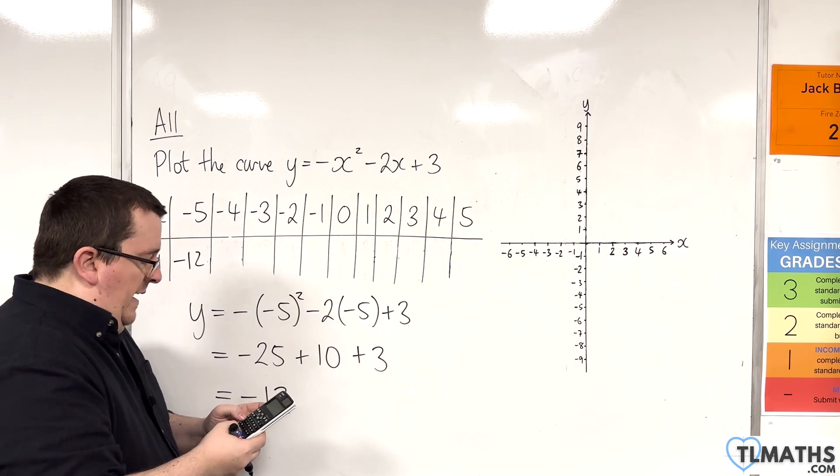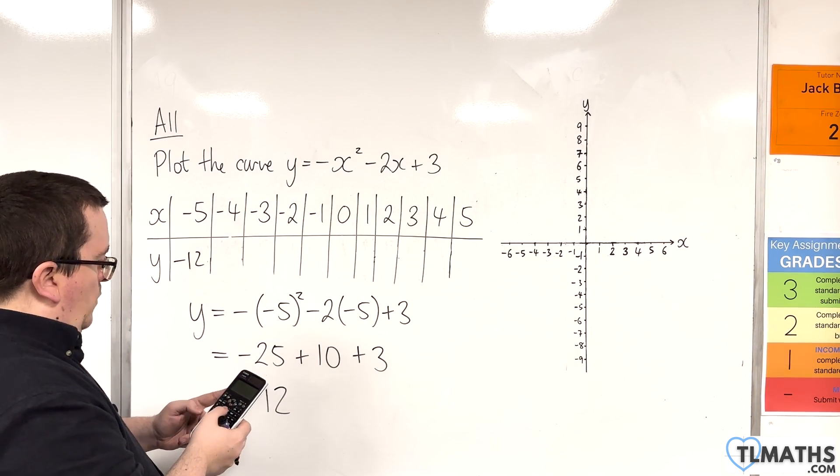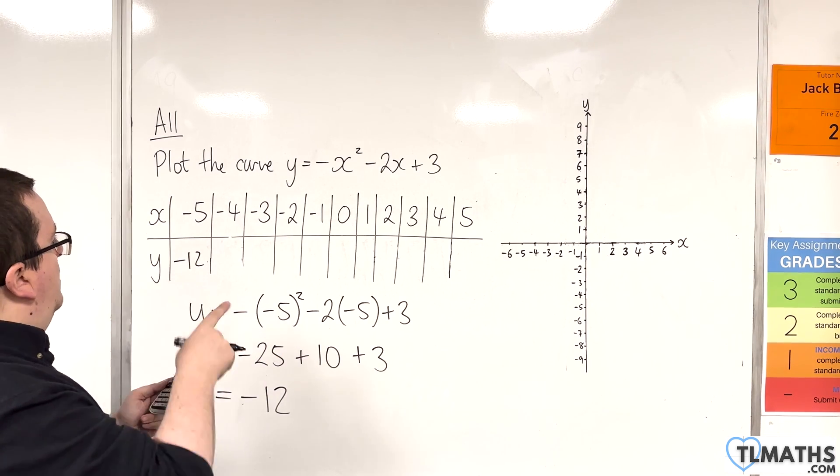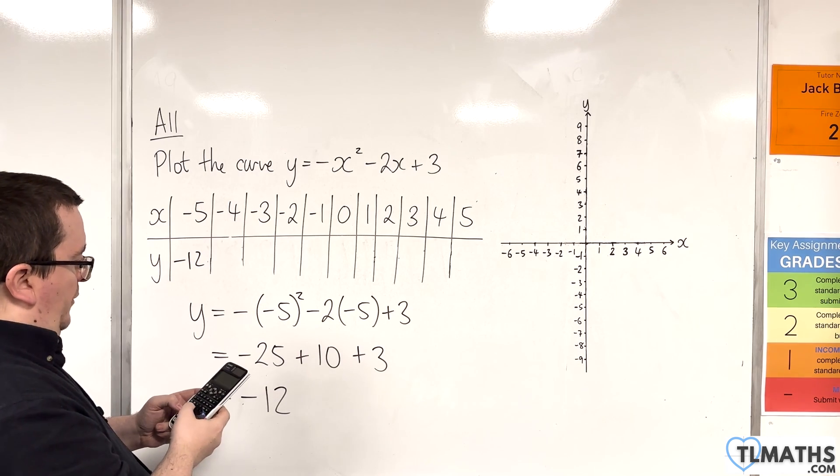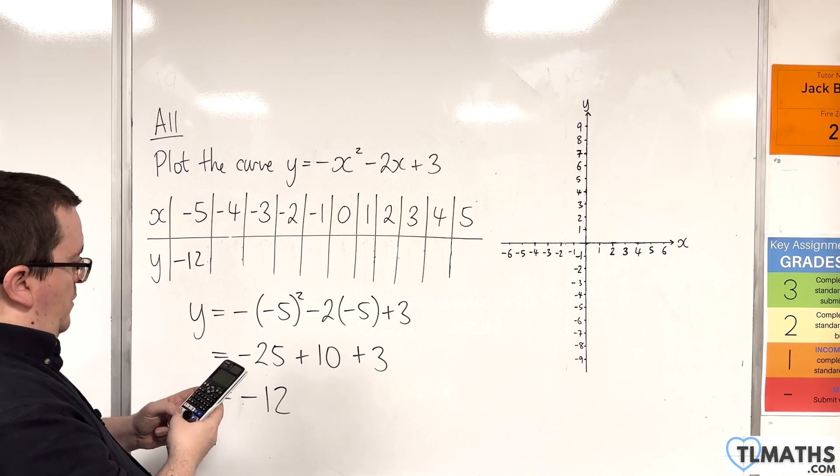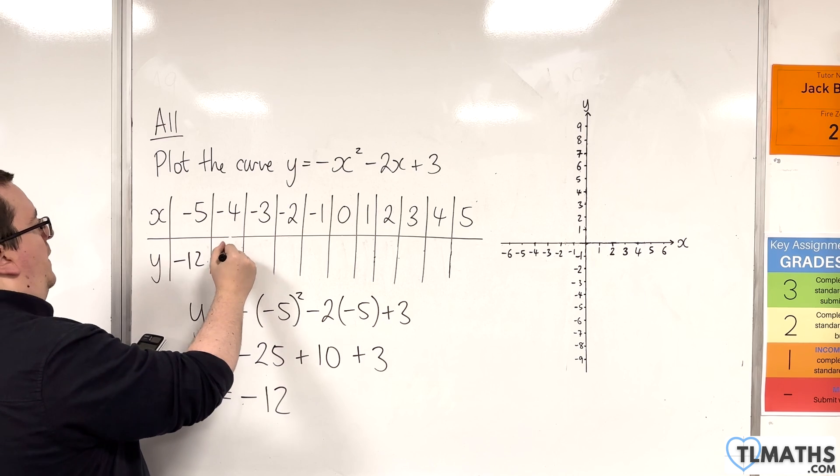So then we have minus minus 4 squared take away 2 lots of minus 4 plus 3 which is minus 5.